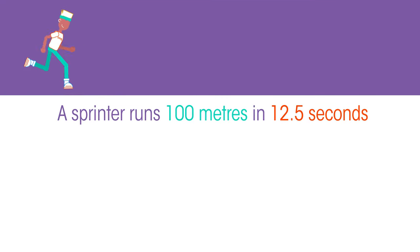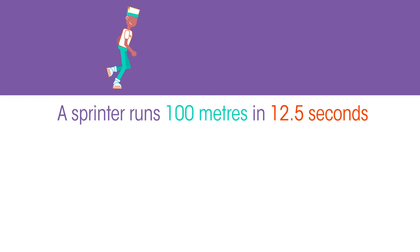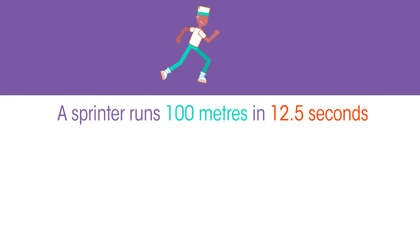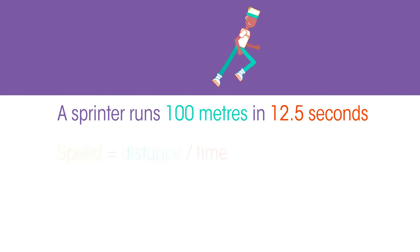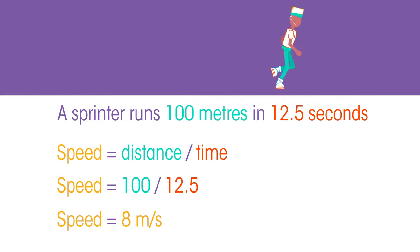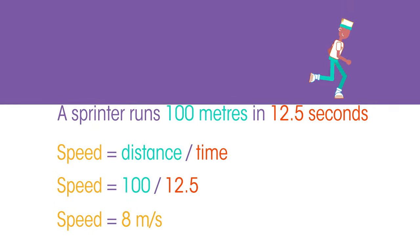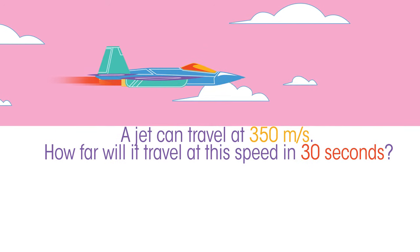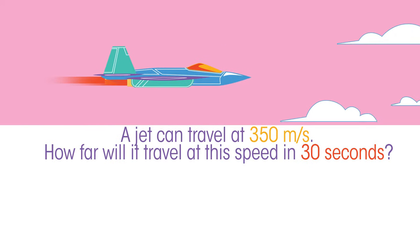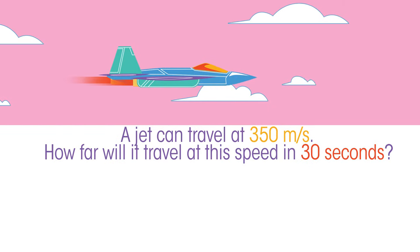Now you try: a sprinter runs 100 meters in 12.5 seconds — pause the video while you work out her speed. Did you get 8 meters per second? And another one: a jet can travel at 350 meters per second — how far will it travel at this speed in 30 seconds?